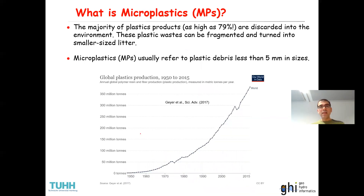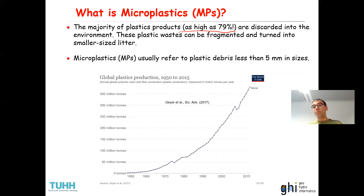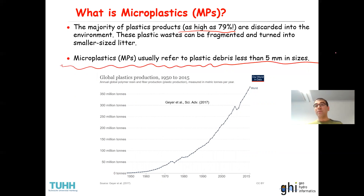These discarded plastics can be fragmented and turn into much smaller plastic particles. Microplastics generally refers to plastics that are less than 5 millimeters in size. So when the size of those fragmented particles is less than 5 millimeters, they are usually called microplastics. We will discuss in more detail about the classification of microplastics, terminology, and so on.